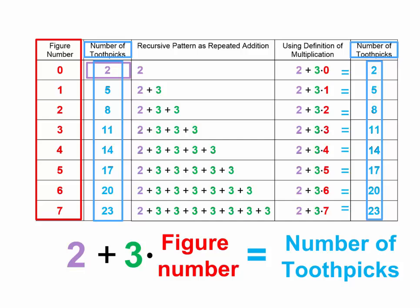Our rule started with the starting value, which we call the initial value. Then we multiplied the figure number by the recursive pattern, or the rate of change. 3 is called the rate of change because the number of toothpicks changes by 3 every time. In this lesson, we used tables to represent patterns to help us write rules for the patterns.